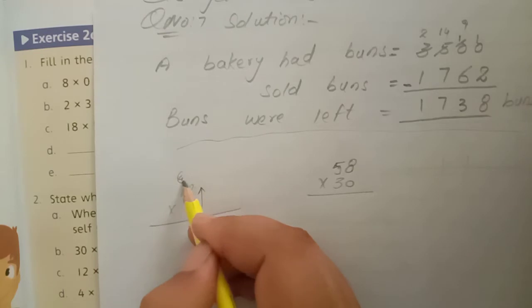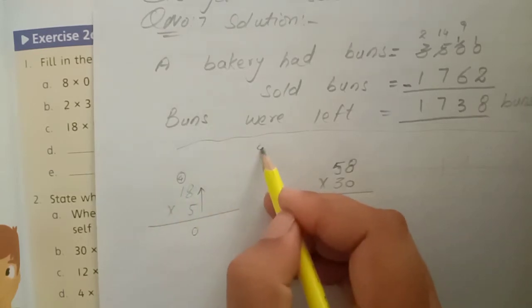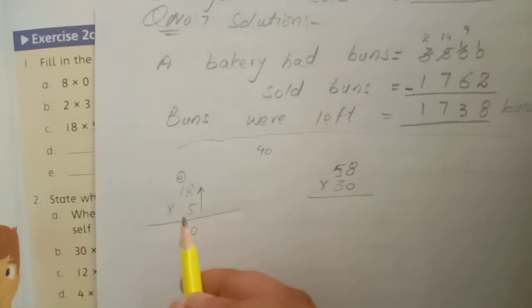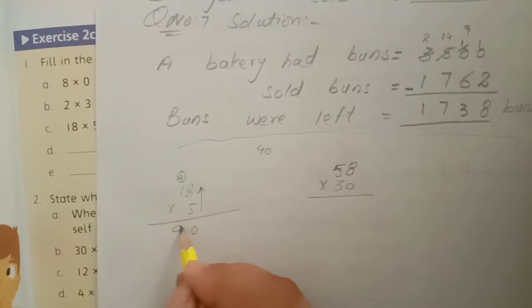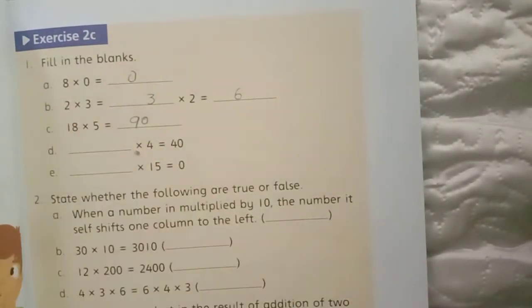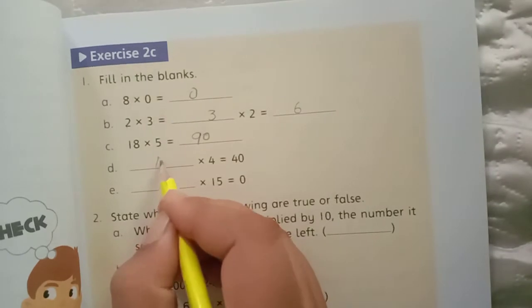When we bring two numbers, there will be 40. Then we will put one number. Multiply to get 40, and we know that 4 tens is 40.